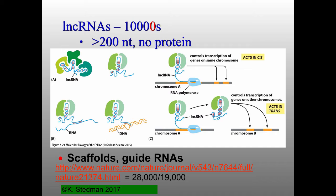Moving from the traditional central dogma of molecular biology — from DNA to RNA to proteins — it's now clear that RNA has a lot more functions in a cell than just telling the cell which proteins to make. We'll first look at examples of what are called long non-coding RNAs, or lncRNAs, and then some of the smaller ones. Non-coding just means these RNAs don't end up being translated; they carry out their functions as simply RNA molecules. Since the last time Dr. Stedman presented this, we've moved from about 1,000 to 10,000 well-known long non-coding RNAs — this is a rapidly evolving, changing field.